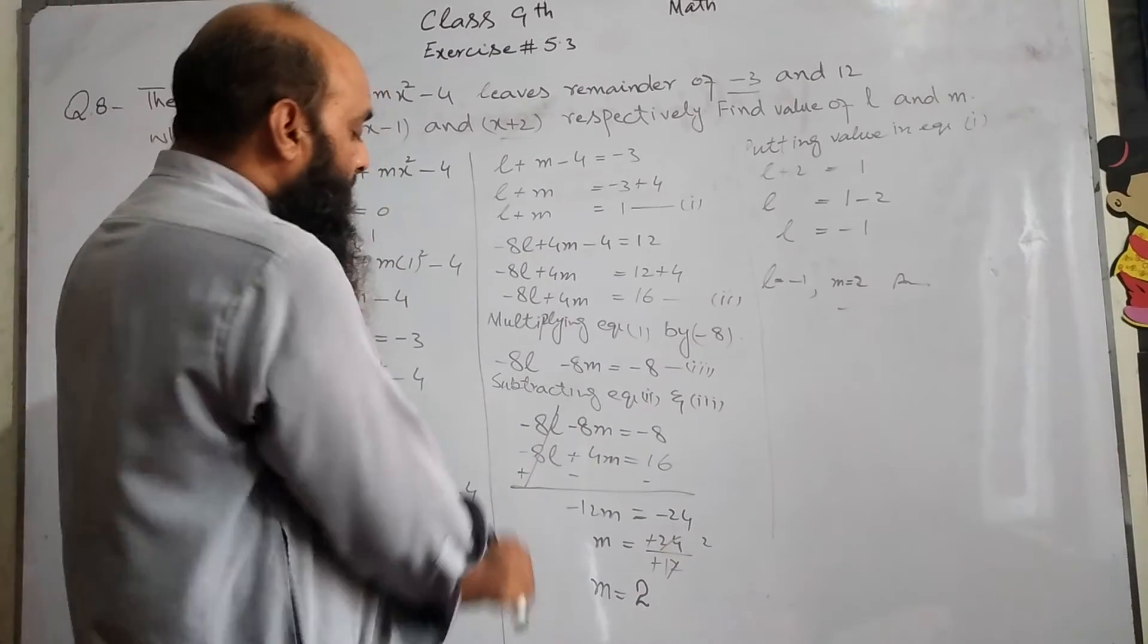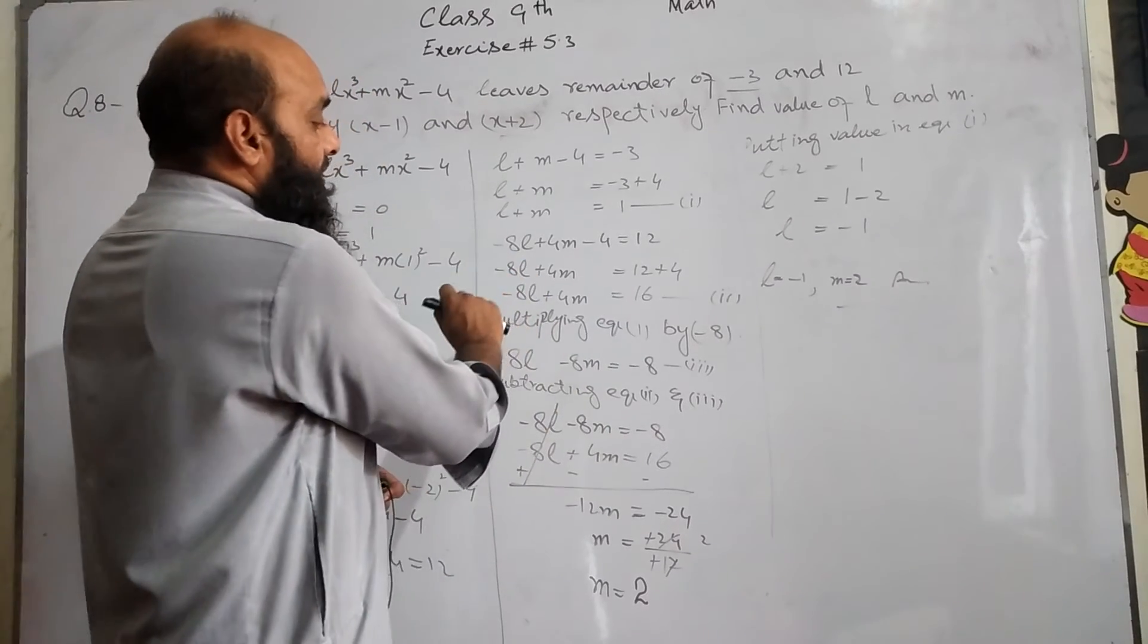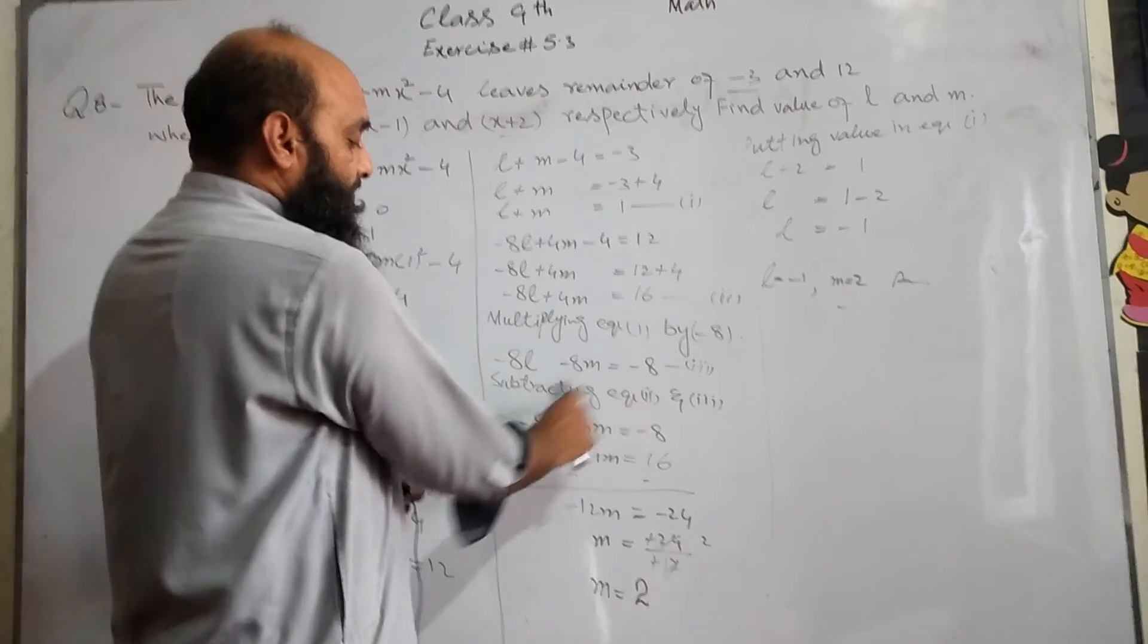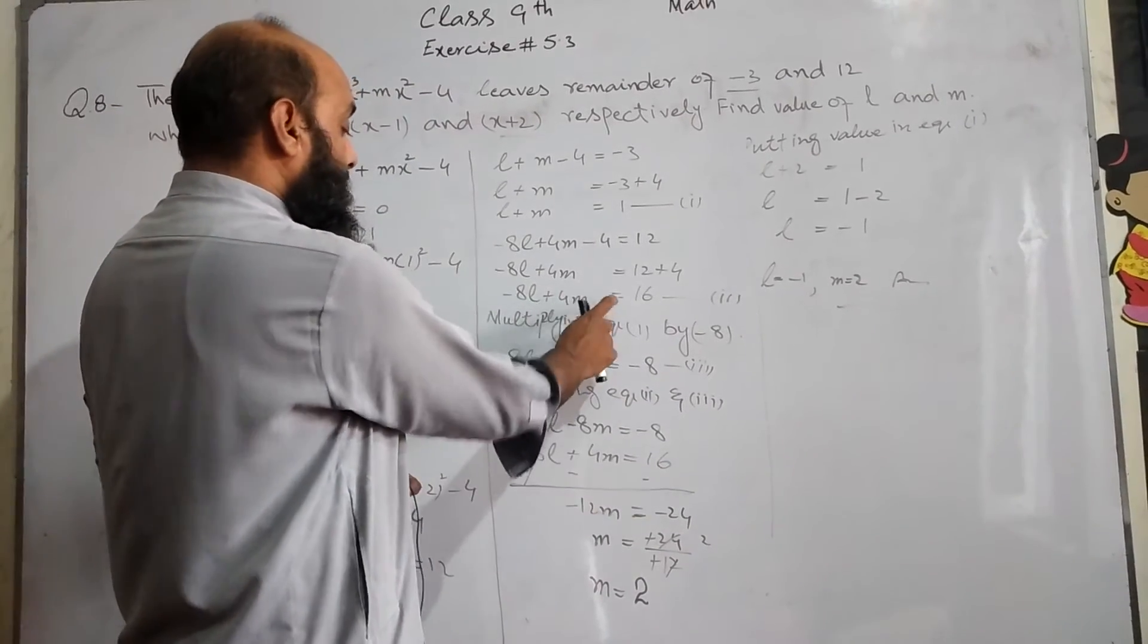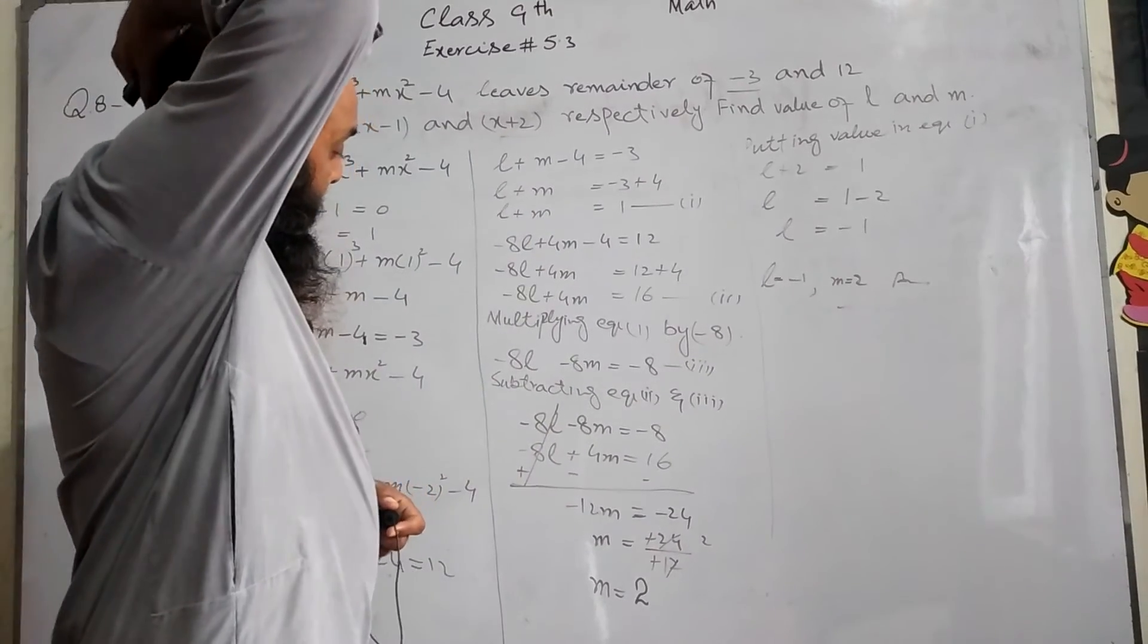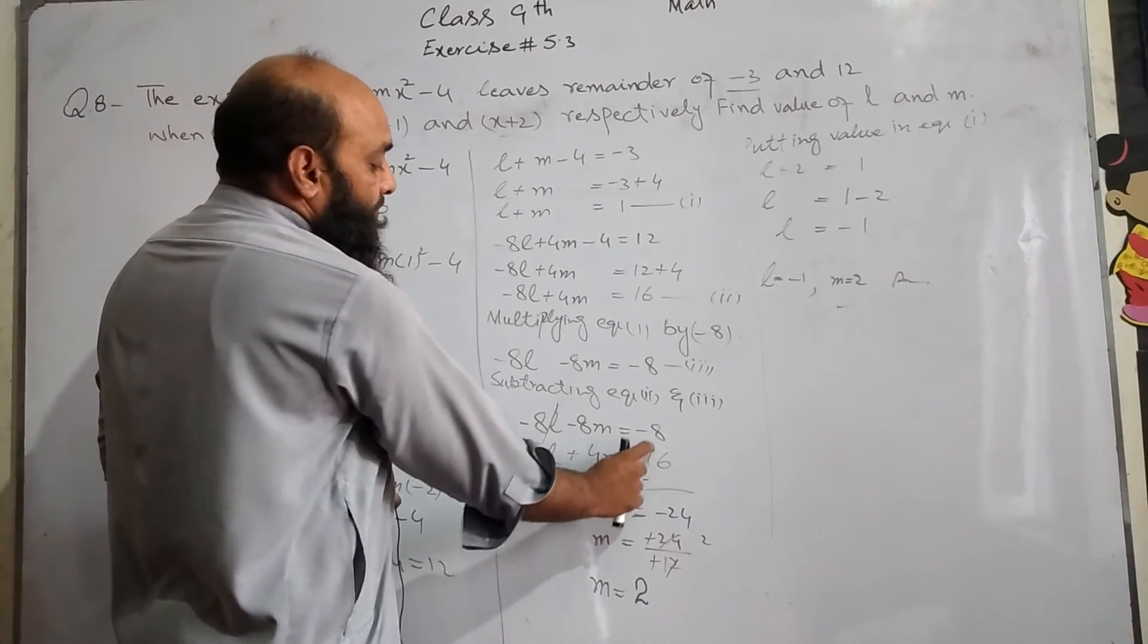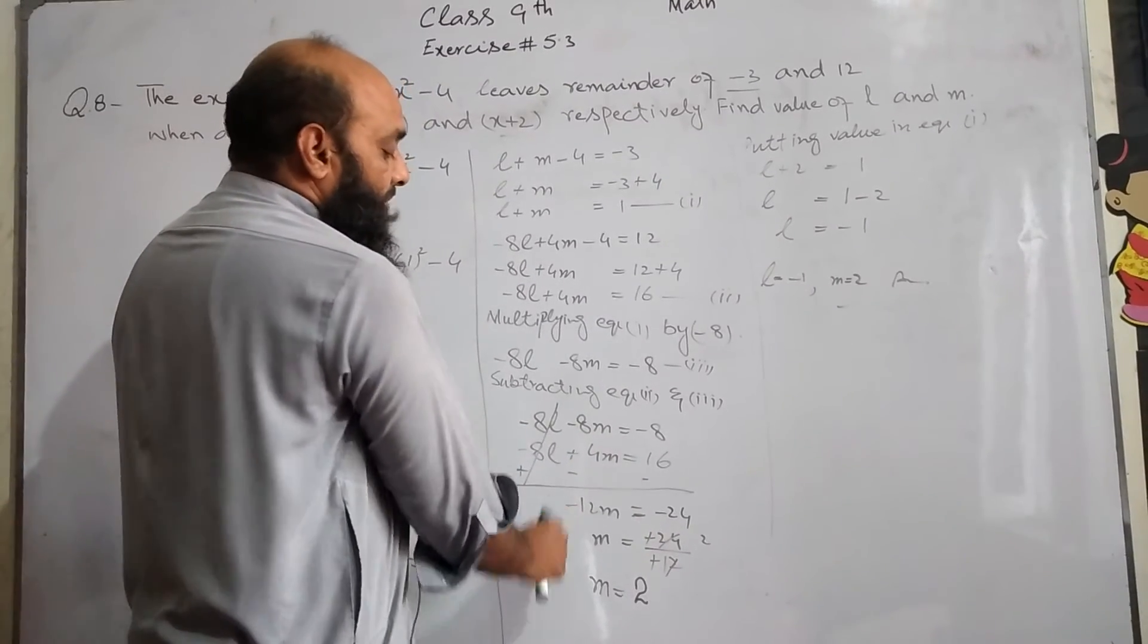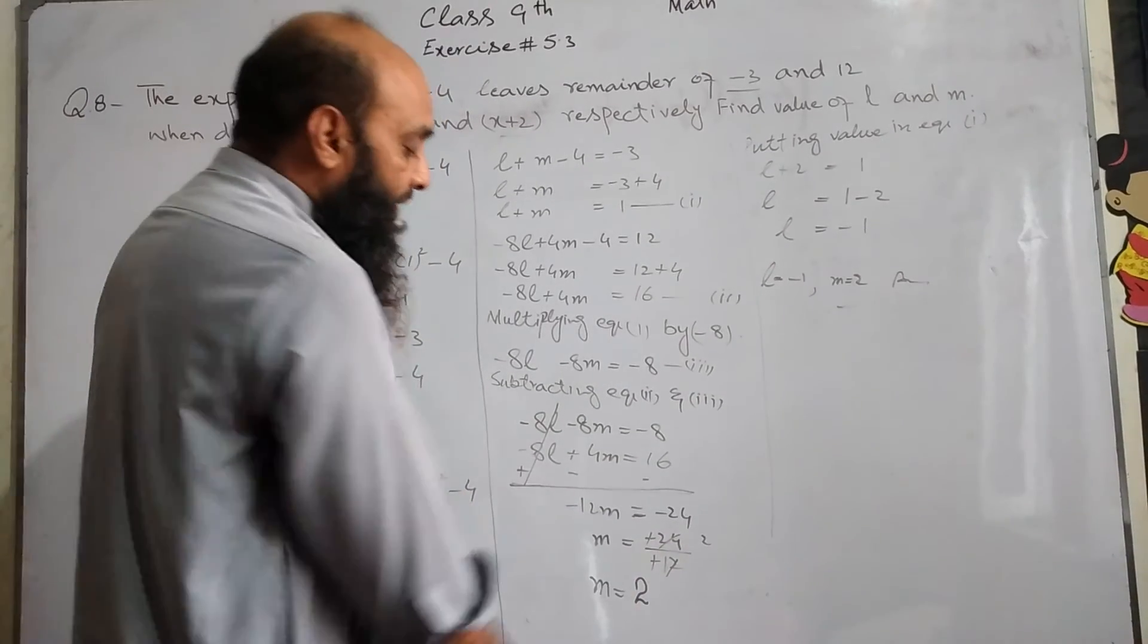We subtract the equations. Minus 8m plus 4m equals -6m on one side, and -8 minus the other value. When we solve, -6m equals a value, so m equals 2.